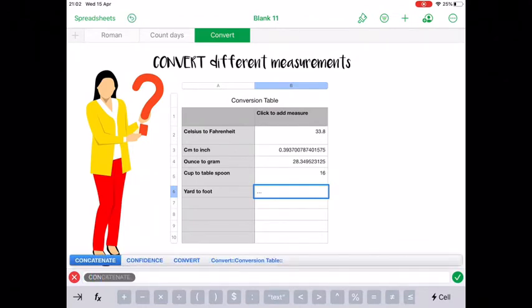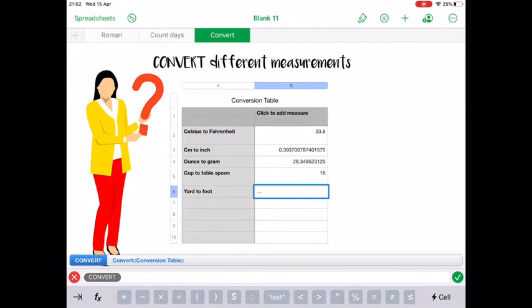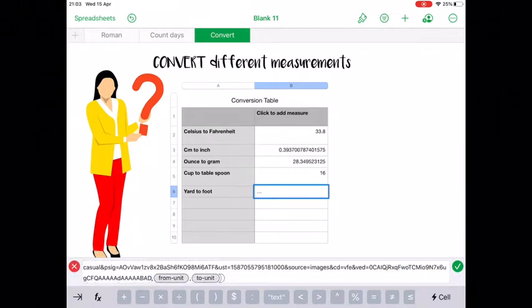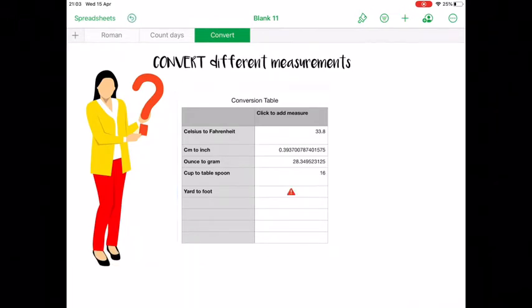All we need to do is enter a cell, press the equals button, and write the word convert. We then have the option to fill in a few different aspects. The first one we're going to fill in is the number we want to convert. I'm just going to put one in here for now as an example.